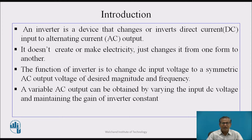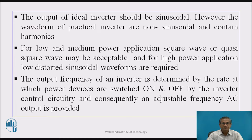A variable AC output voltage can be obtained by varying the input DC voltage and maintaining the gain of the inverter constant. The output of an ideal inverter should be sinusoidal, but the output of a practical inverter is non-sinusoidal and it contains harmonics.